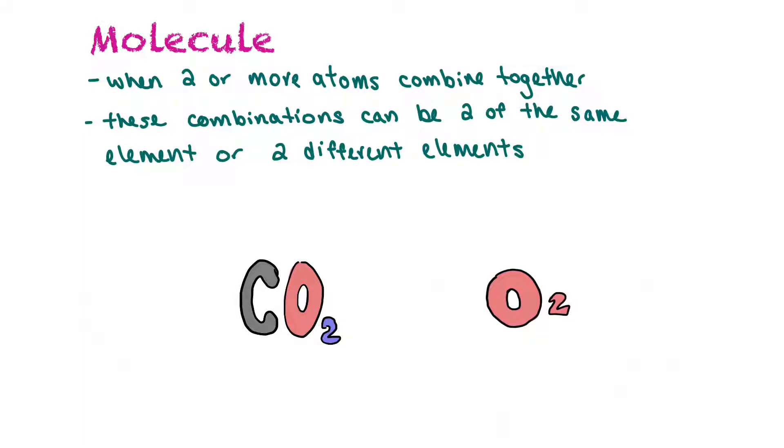A molecule is when two or more atoms combine together. These combinations can be two of the same element, like oxygen where there's two oxygen atoms combined together to make a molecule, or they could be of two or more different elements. If we look here at carbon dioxide, we have carbon and two oxygen atoms to make that molecule.